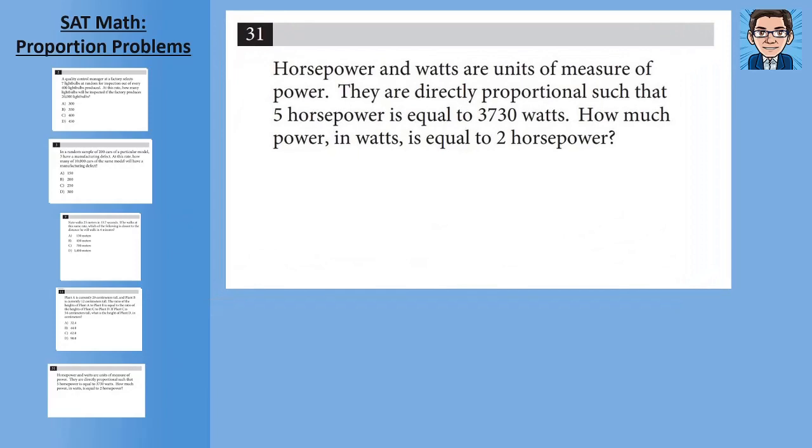Alright, and the last problem, we've got to figure out the answer. Horsepower and watts are directly proportional. When it says directly proportional, that means that when we divide them, the proportions are going to be equal to each other. So 5 horsepower equals 3,730 watts. How many watts in 2 horsepower?